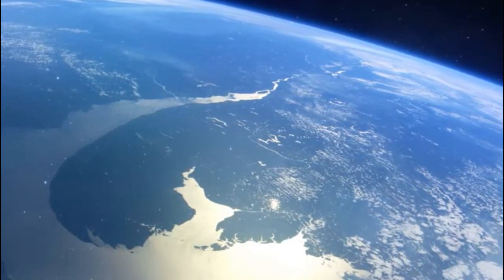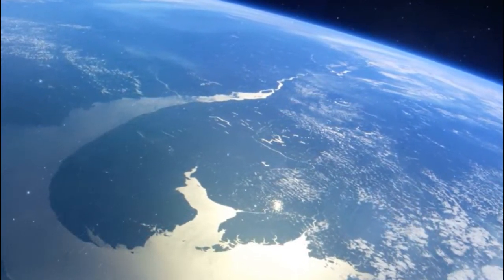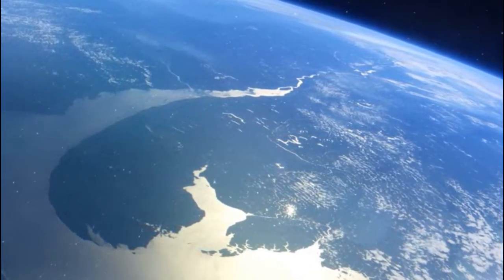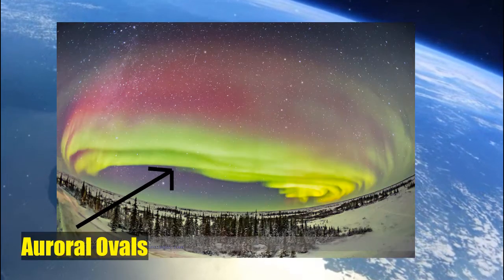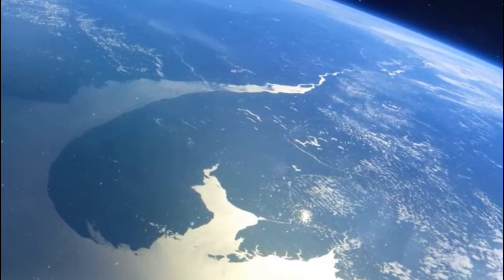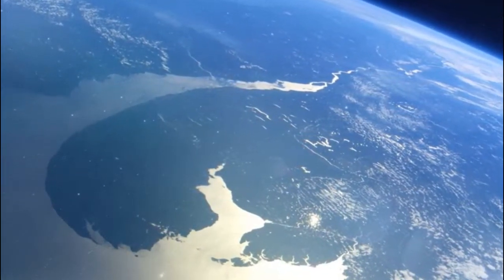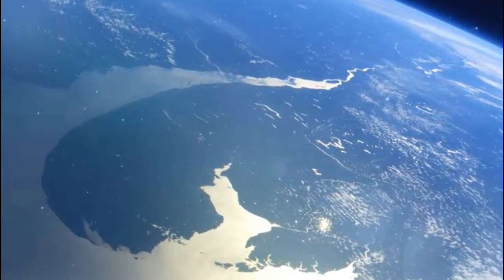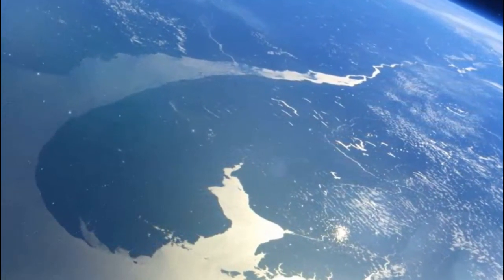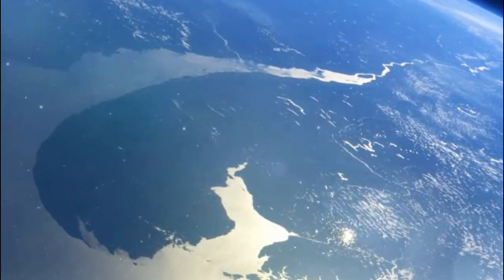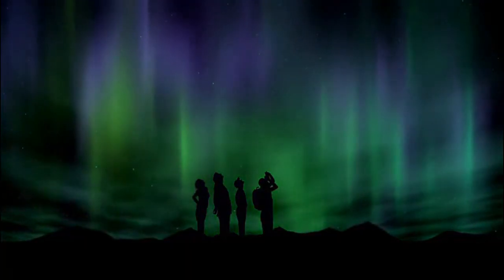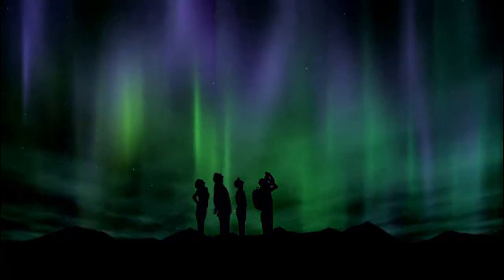This creates two glowing rings of auroral emission around the north and south magnetic poles, known as auroral ovals. As they decay back to their original state, they emit distinctive colors of light. This light is what we see when we look at the northern lights.